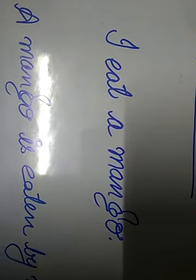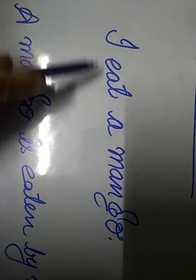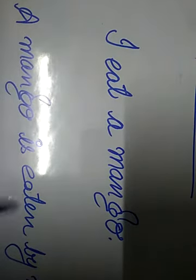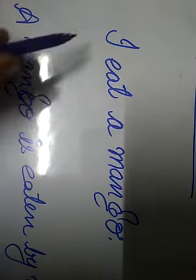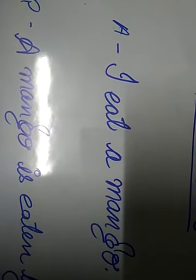Meaning same hai but form alag hai. Jaise hum Hindi mein bolte hain: maine aam khata hoon aur aam khaya gaya meri dwara. In the same way, I've written in English: I eat a mango, a mango is eaten by me. We have converted this into passive. This sentence is active and this sentence is passive.